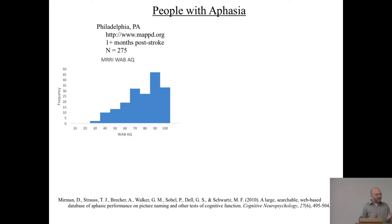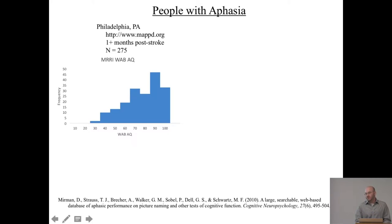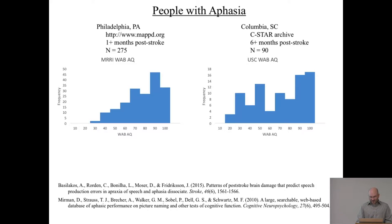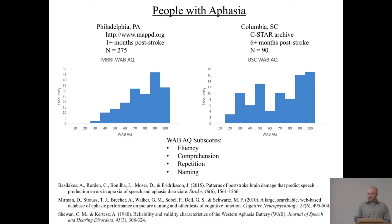We looked at a lot of people with aphasia. The first group comes from Philadelphia — there's a large database online at MAPPD.org. All these folks are at least one month post-stroke, most at least six months. This shows the distribution of general aphasia severity. We also looked at a second group from a totally different research hospital in Columbia, South Carolina. These folks were all six-plus months post-stroke, and we had 90 individuals. These are very large groups compared to typical studies of this population.